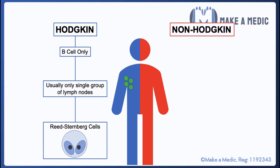The pathological hallmark of Hodgkin lymphoma is the presence of Reed-Sternberg cells on a lymph node biopsy. These are binucleate lymphocytes which are sometimes described as owl's eyes because of the way that they appear.